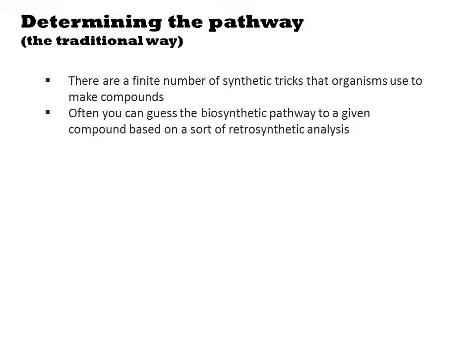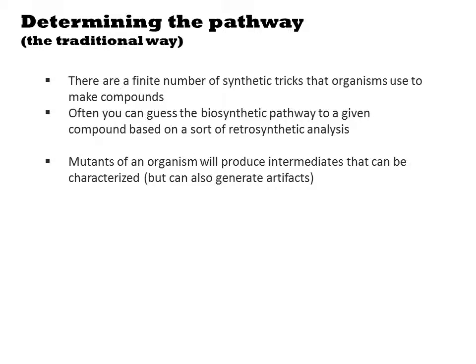If you want to transfer a biosynthetic pathway from one organism to another, you must identify the genes involved. There are a finite number of synthetic tricks that organisms use to make compounds. Because of this, you can often guess the biosynthetic pathway to a given compound based on a retrosynthetic analysis or by homology to known related pathways. Another tool is to use genetics: if the source organism is a microbe, you can easily mutate the organism and screen for a strain that does not produce the product. By examination of cell lysate you can determine what chemical intermediates were lost due to the mutation and correlate this information with the gene that was mutated, thus deducing the pathway from primary metabolism to product.